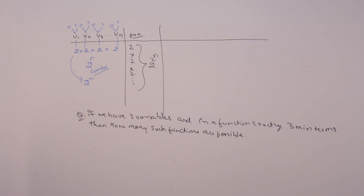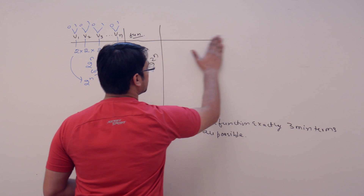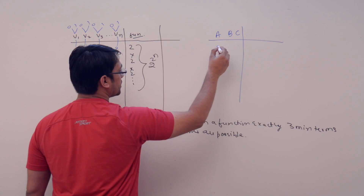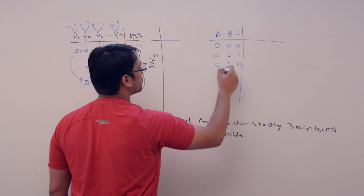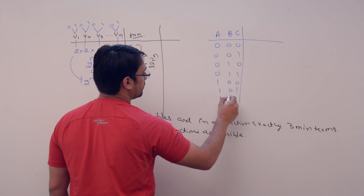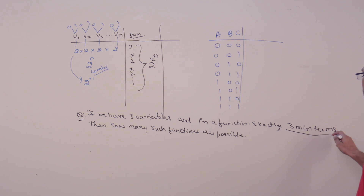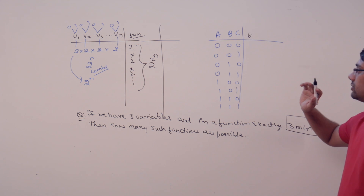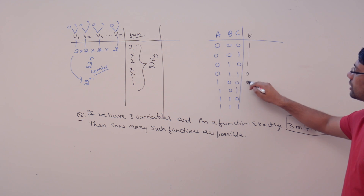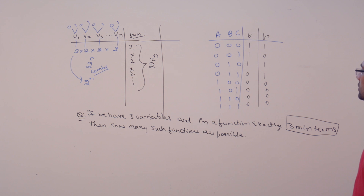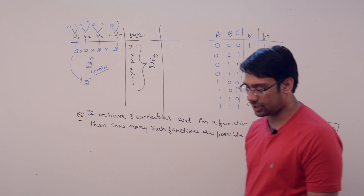For a function with three variables a, b, and c, the combinations can be 000, 001, 010, 011, 100, 101, 110, 111 — giving eight rows. Having exactly three min terms means we have exactly three 1s in the output column, and those 1s can be placed anywhere among the eight locations in any combination.